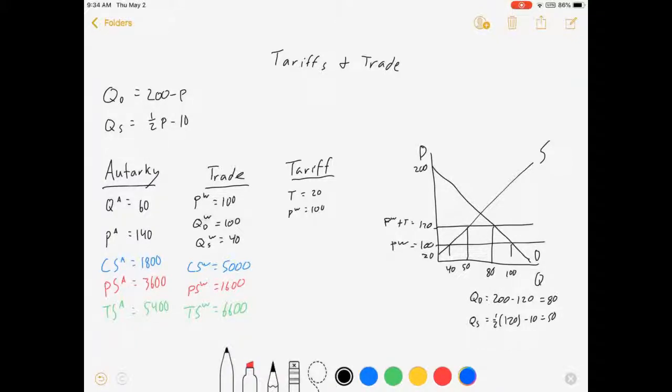And the first thing we're going to see is that where imports used to be 60 units of the good, now it's just $30. So our tariff is definitely reducing trade. Let me write these in here real quick. QD with tariff is equal to $80. QS with tariff is equal to $50. Alright, let's calculate consumer and producer surpluses.